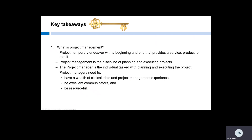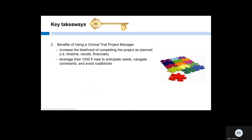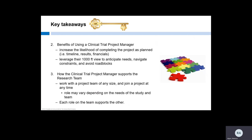Let's review the key takeaways from today's module. A project is a temporary endeavor with a beginning and end that provides a service, product, or result. Project management is the discipline of planning and executing projects. The project manager is the person responsible for planning and executing the project. To be successful, clinical trial project managers need to have a wealth of clinical trials and project management experience, excellent oral and written communication skills, and be resourceful. A CTPM may be the puzzle piece that the study is missing. A CTPM can bridge a team's knowledge or skills gaps on a variety of study processes to successfully execute the trial. The team will benefit from their view of the big picture to navigate project constraints and avoid roadblocks. The CTPM role is integrated into the study team, and the exact role the CTPM will fulfill depends on the needs of the study and the team. Each role on the team supports the other and all are critical to the study's success.